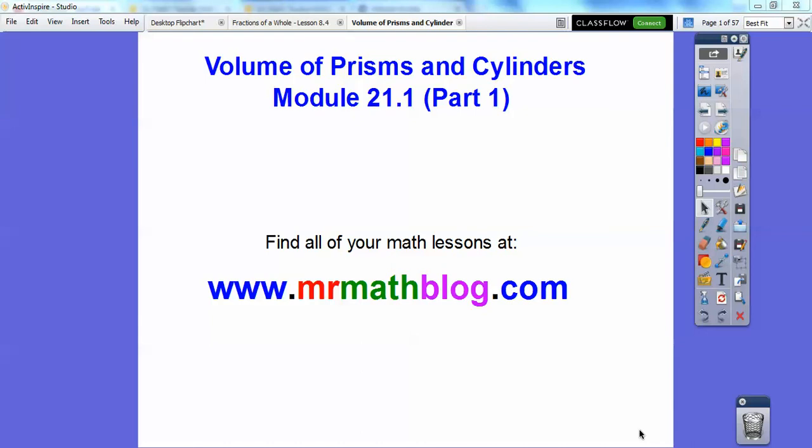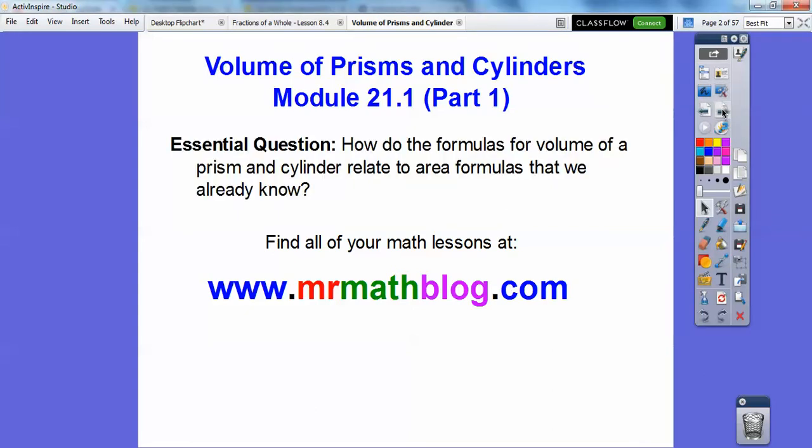Hey folks, this lesson is volume of prisms and cylinders. This is module 21.1 and we're going to divide this up into two days. So here's our question: How do the formulas for volume of a prism and cylinder relate to the area formulas that we already know?